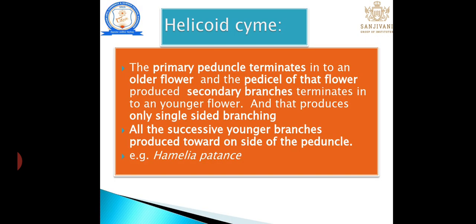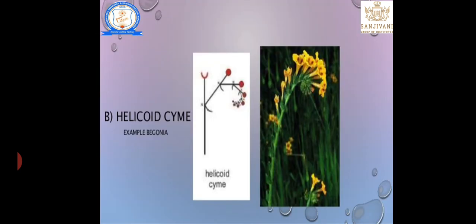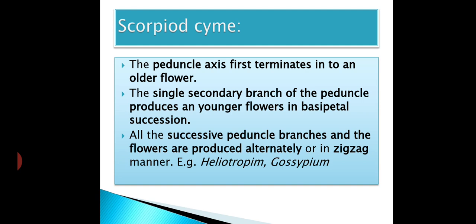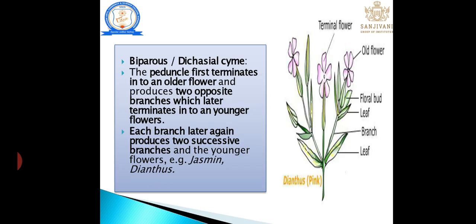Helicoid: primary peduncle terminates into older flower, and from its pedicel secondary branches produce younger flowers with only one-sided branching — successive younger branches are produced toward one side. Scorpioid: peduncle axis terminates into an older flower; a single secondary branch produces younger flowers in basipetal succession; successive flower-bearing branches are produced in an alternate or zigzag manner.